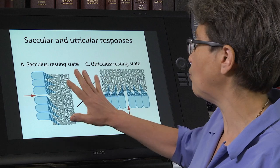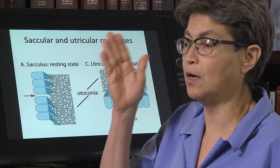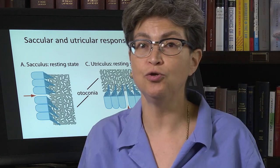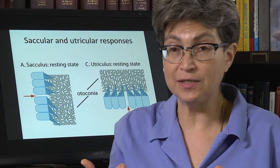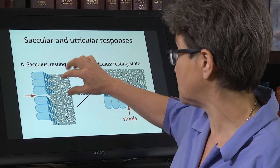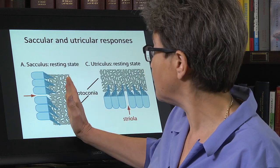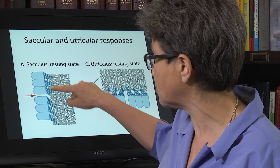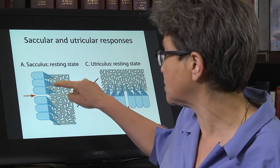The important point is that the sacculus is able to signal up and down motion. So let's say that you jump up and down. As you're going up, gravity is acting more upon you. This rock will be displaced down. It'll be a greater stimulus on these hair cells and a lesser stimulus on these hair cells.